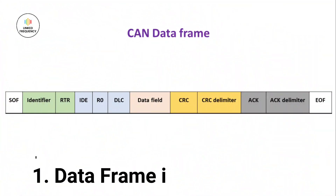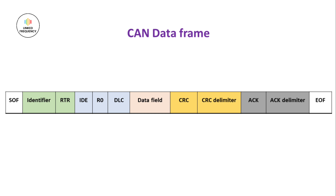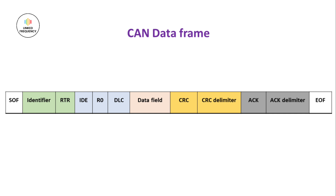Now it's time to understand each of them in detail. The first one is DataFrame. DataFrames are the most commonly used frame types in the CAN protocol. They carry the actual data from the transmitting node to one or more receiving nodes. DataFrames contain an 11-bit identifier or a 29-bit identifier. These identifiers uniquely identify the message content and priority. The screen represents the CAN DataFrame, which includes the following fields: Start of Frame, Arbitration field,